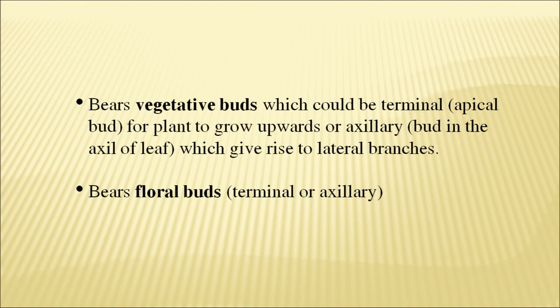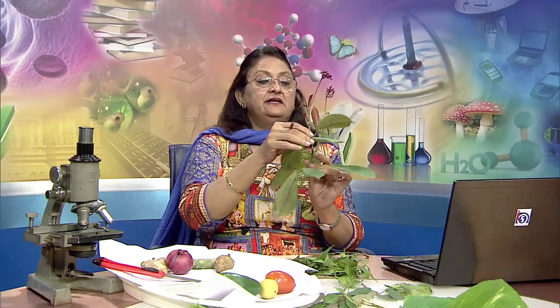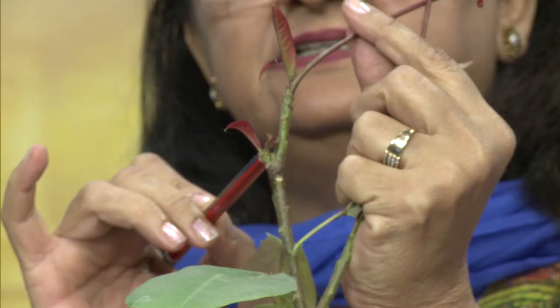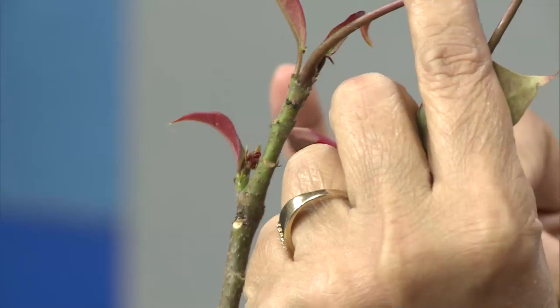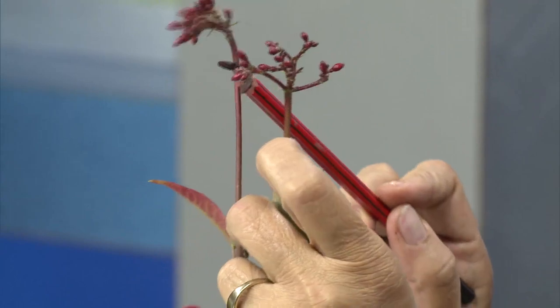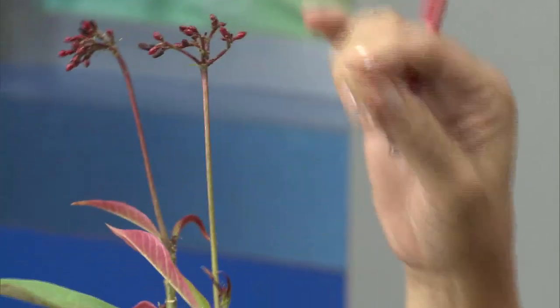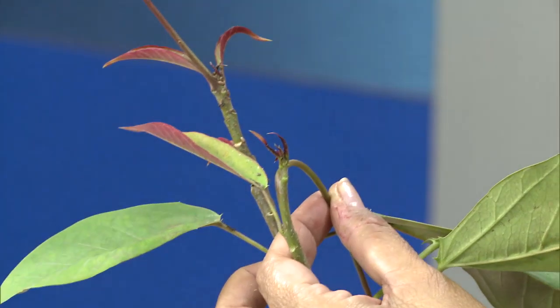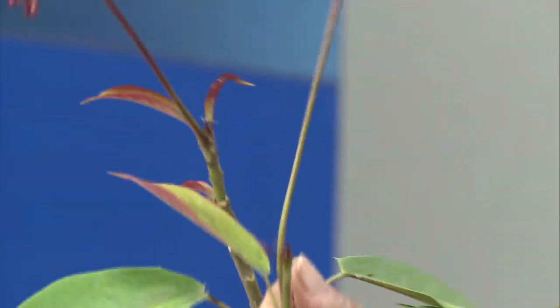There are vegetative buds which can be terminal or apical in their position. This is the axillary bud, and these are the terminal buds on the apex of the stem. This side branch has an apical bud at its tip, which in this case is a floral bud and will bear fruits in due course of time.